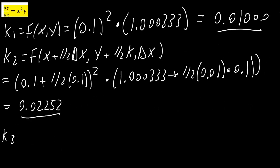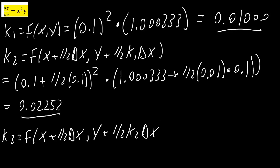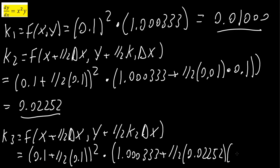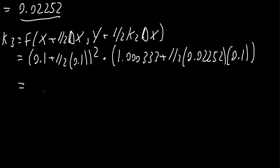Same idea for k3. k3 = f(x + ½Δx, y + ½k2·Δx). With x = 0.1 and Δx = 0.1, we get (0.1 + ½×0.1)² times (1.000333 + ½×0.02252×0.1). Using a calculator, we get k3 = 0.02253.